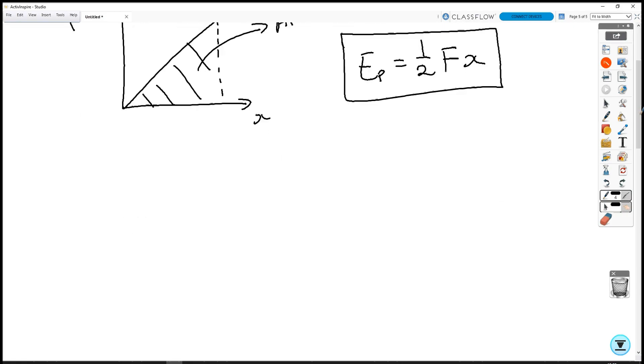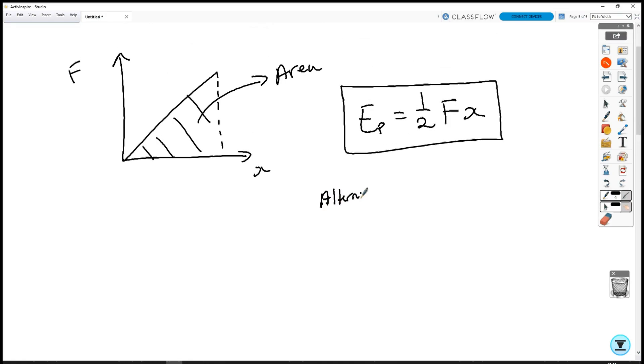The area is given by EP equals a half fx. We can make some alternative versions by using the substitution f equals kx. If we put kx into f, we get EP equals a half kx squared. And if we make a substitution for x, we can say that f divided by k equals x. If we substitute that in, we get EP is equal to a half f squared over k.